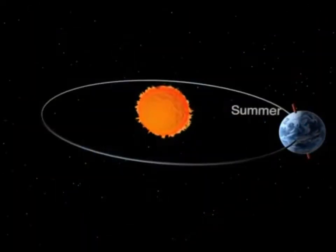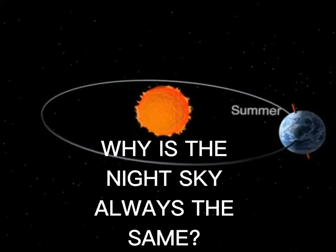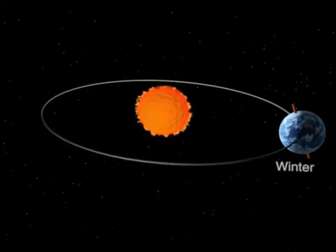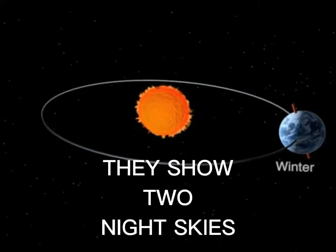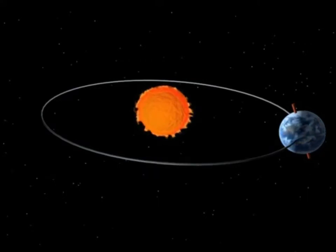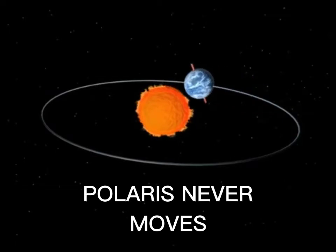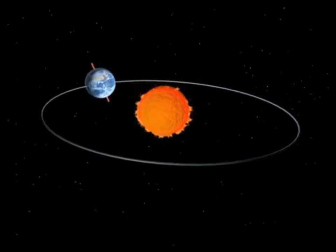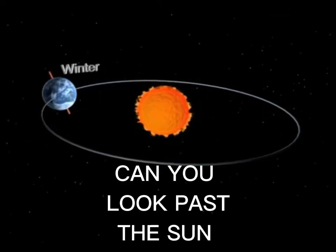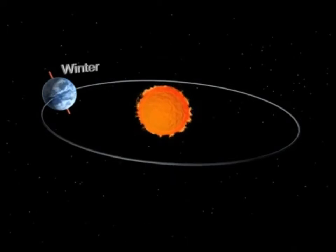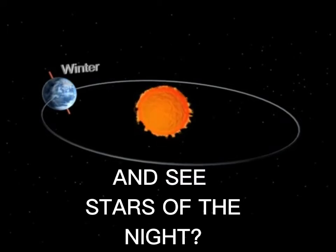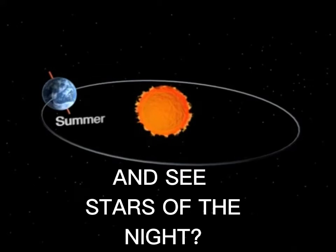When the axis tilts toward the sun, the northern hemisphere experiences summer while the southern hemisphere experiences winter. In half a year, the earth will revolve elliptically counterclockwise around the sun, while the axis stays tilted at 23.5 degrees. When the axis tilts away from the sun, the northern hemisphere then experiences winter and the southern hemisphere experiences summer.